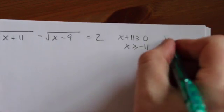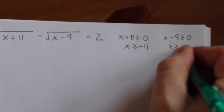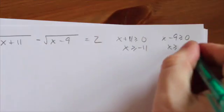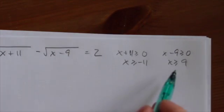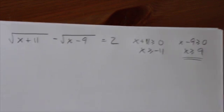And over here, we know that x minus 9 has to be greater than or equal to 0, which means x has got to be greater than 9. Now, comparing those two, the only one that makes them both work is x is greater than or equal to 9.